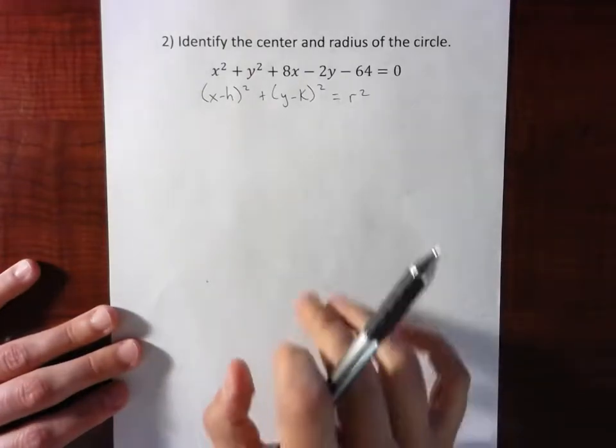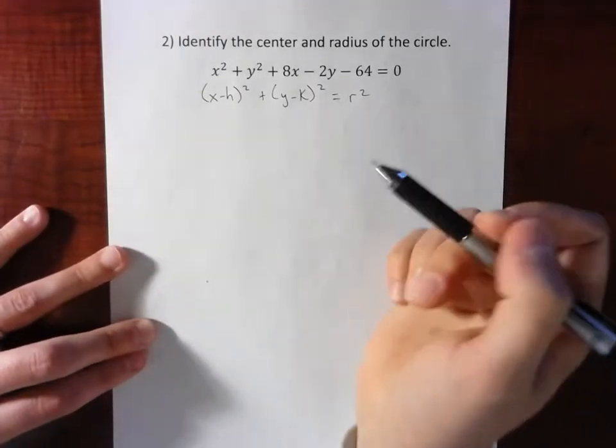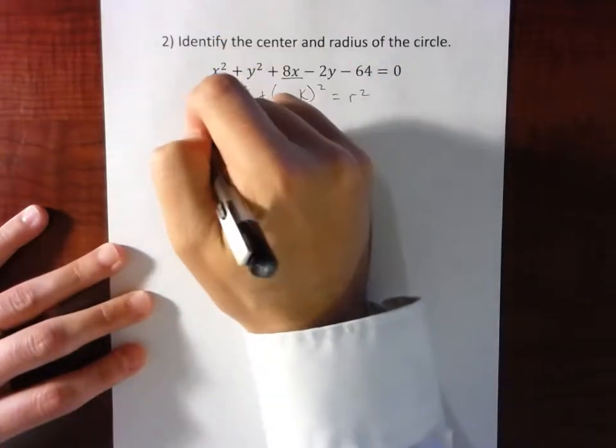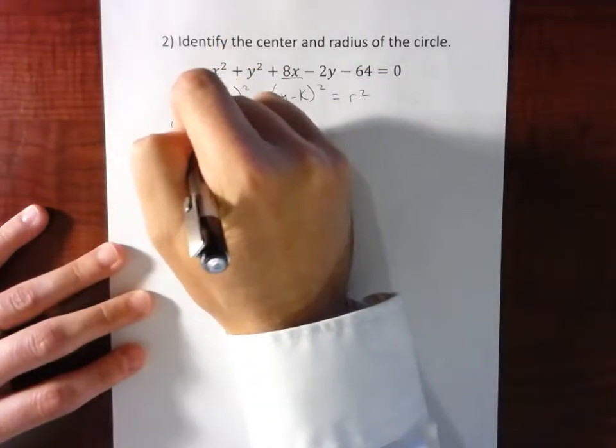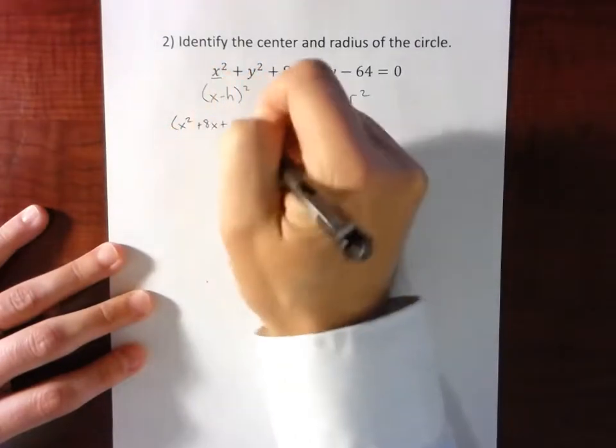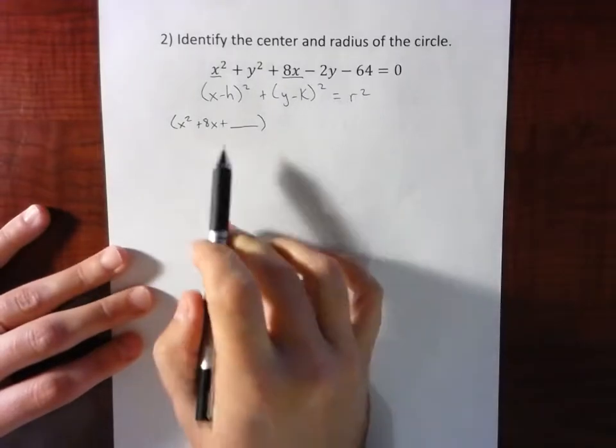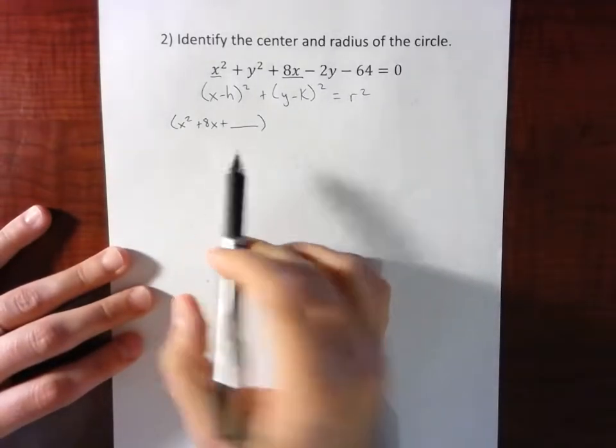To do that, we're going to complete the square. So first of all, I'm going to group my x's together. So I've got x squared plus 8x plus something. I like to leave a box there to remind me what I'm doing in the process of completing the square.